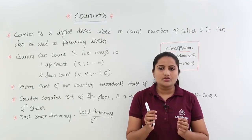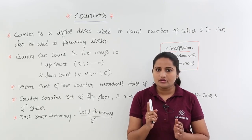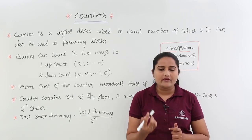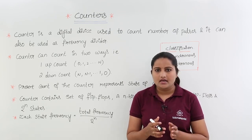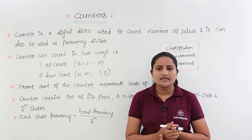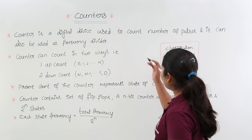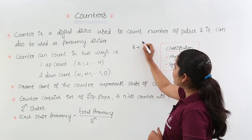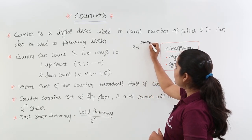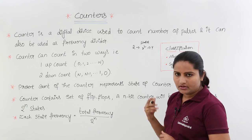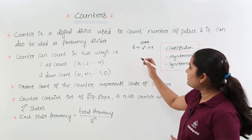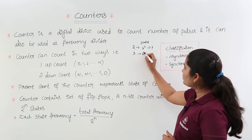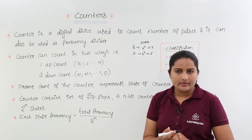You require n flip flops to design an n-bit counter. Any n-bit counter needs to pass through 2 power n states — that means an n-bit counter contains 2 power n states. For example, a 2-bit counter has 2 squared = 4 states, and a 3-bit counter has 2 cubed = 8 states.